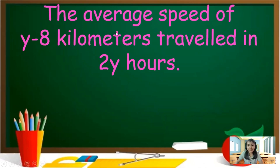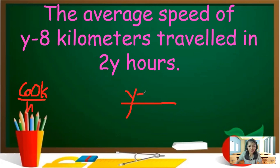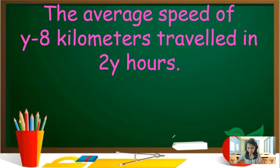Another example: 'The average speed of y minus 8 kilometers traveled in 2y hours.' Average is a fraction — draw the fraction bar. Kilometers go on the numerator, which is y minus 8. Hours go on the denominator, which is 2y. So our answer is (y minus 8) over 2y.